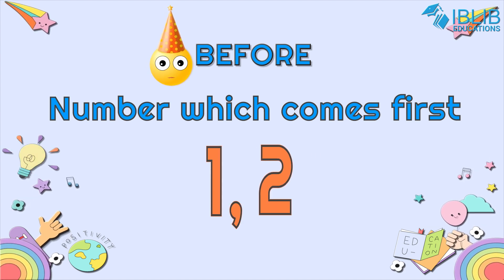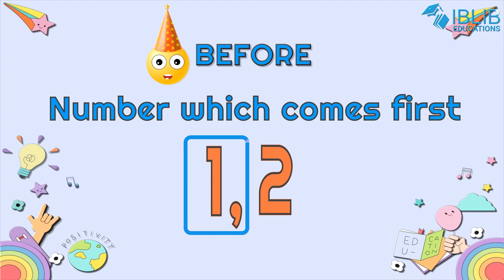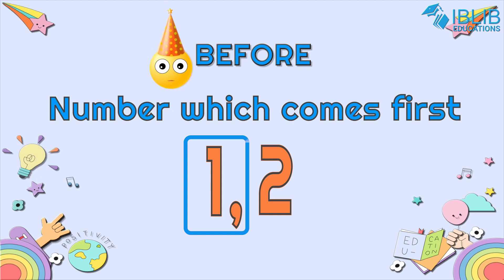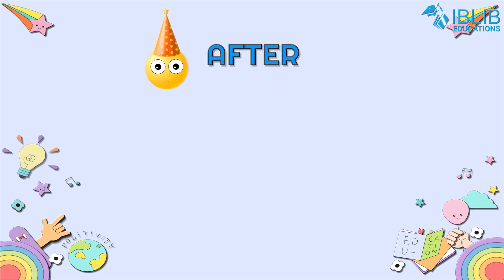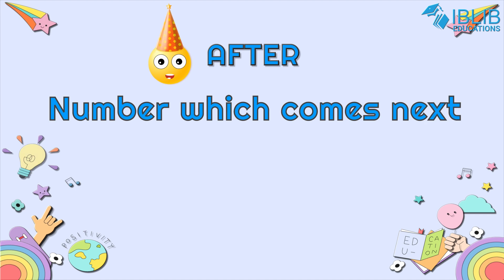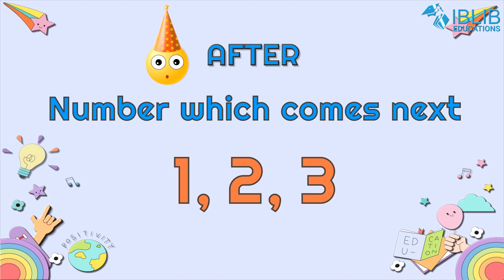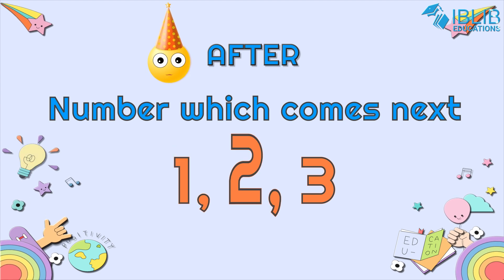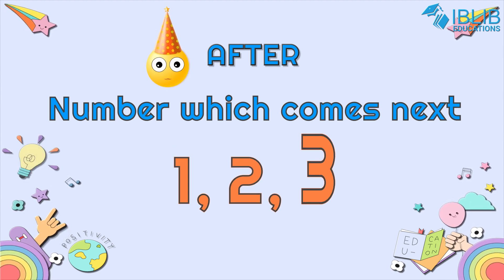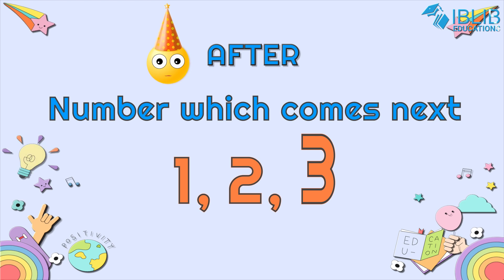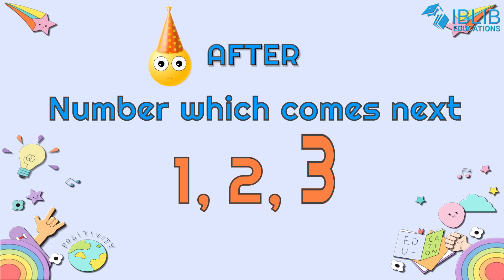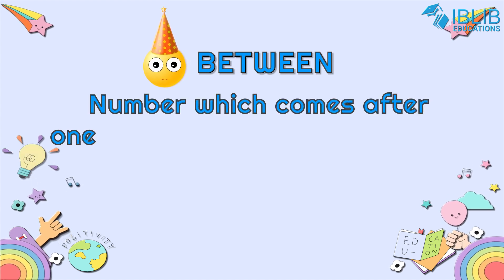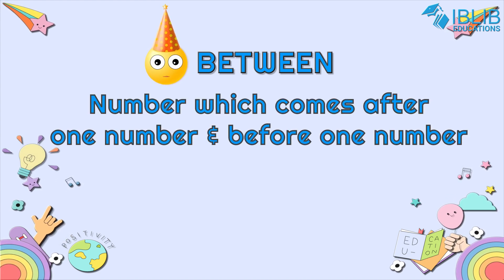Yes, that is number 1. Number 1 comes before 2. The number which comes next is called the 'after' number. As we can see, number 1 comes before 2, and after 2 there is number 3. Yes, number 3 comes after 2.